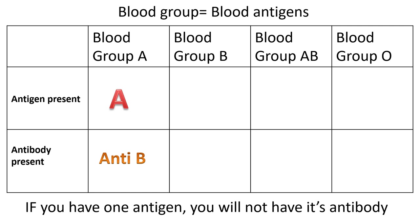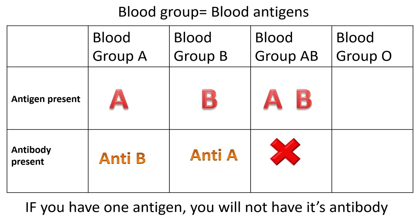Similarly, a person having blood group B will have antigen B and will have antibodies against antigen A. A person having blood group AB will have both antigens. Since both antigens are self-antigens, it will not have any antibodies. Blood group O individuals do not contain antigen A or antigen B. As we know, they have antigen H. Thus, they show the presence of antibodies against both antigen A and antigen B.